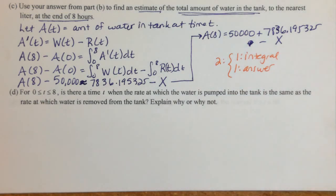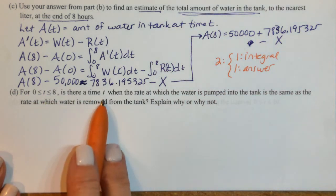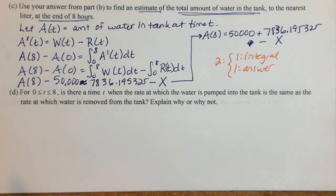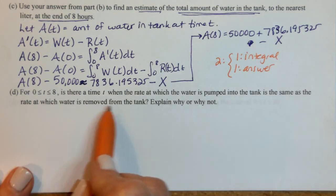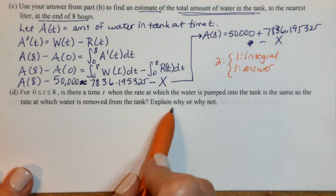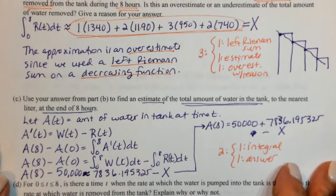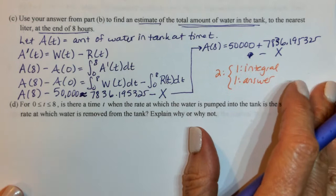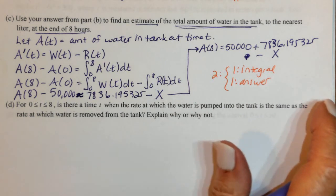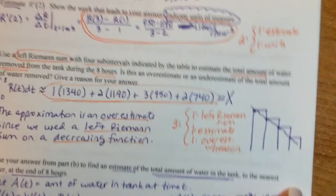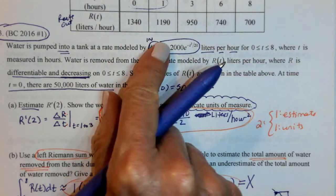Part D: Between 0 and 8 hours, is there a time T when the rate at which water is pumped into the tank equals the rate at which water is removed? Explain why or why not. Part D is sometimes tricky, sometimes not — don't assume you can't do it.